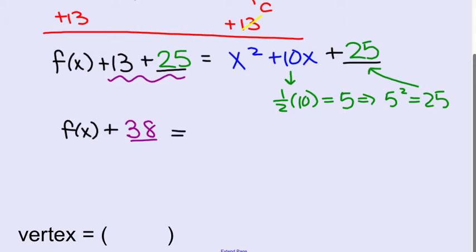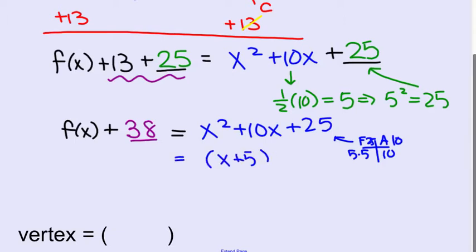And then equals, and now we have this quadratic equation on the right that we can now factor. This is a perfect square trinomial. So you say, what are the factors of 25 that add to 10? Well that's 5 times 5, which is 25 adds to 10. So in factor form, that's x plus 5, and x plus 5, or x plus 5 all squared.